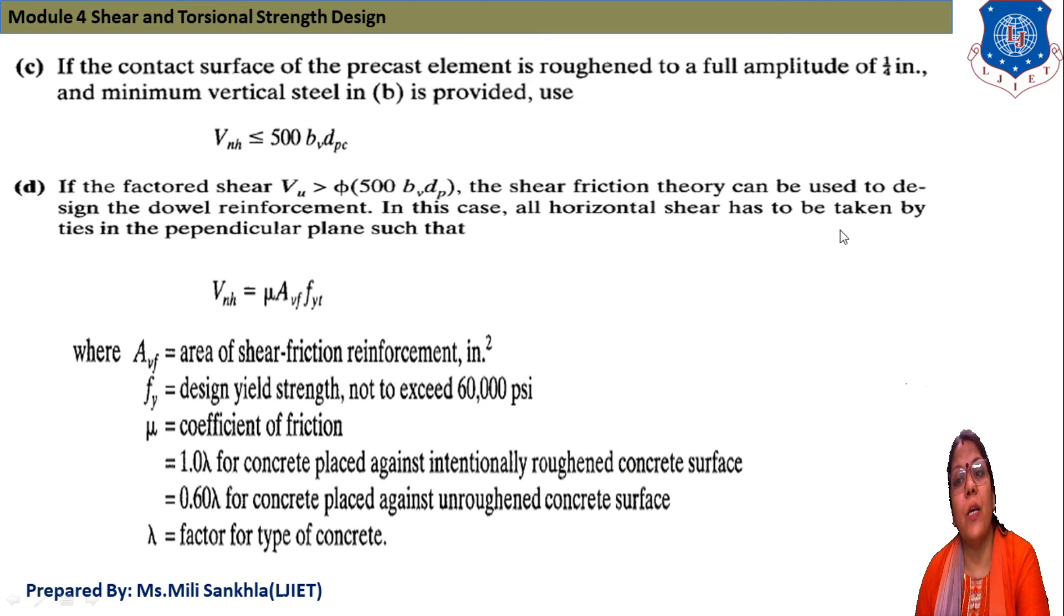In this case, all horizontal shear has to be taken by ties in the perpendicular plane, such that Vnh = μ·Avf·fy. Where Avf is the area of shear friction reinforcement, fy is the design yield strength, μ is coefficient of friction, and λ is factor for type of concrete.